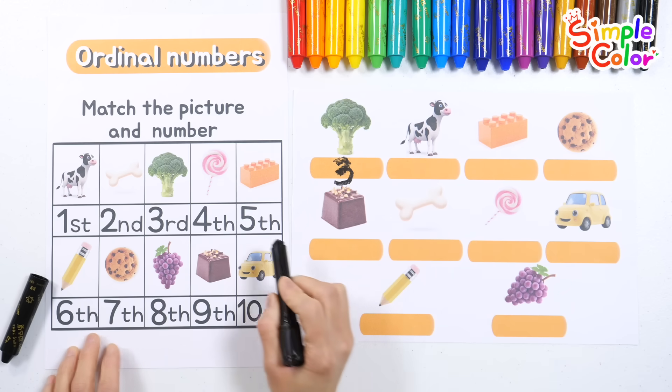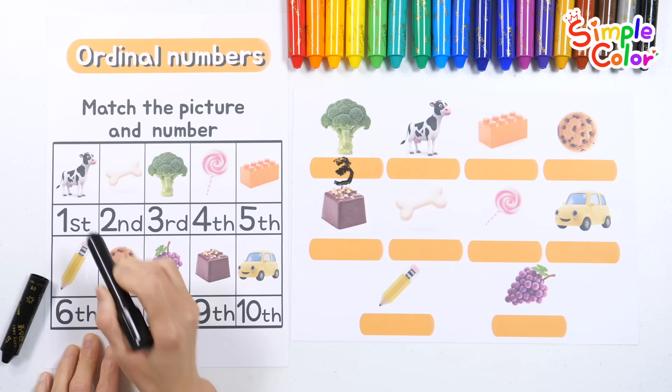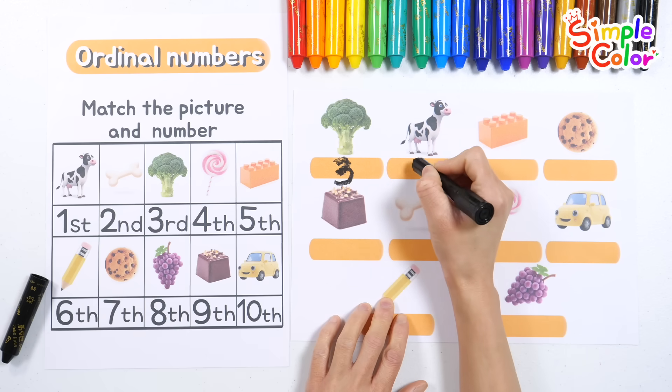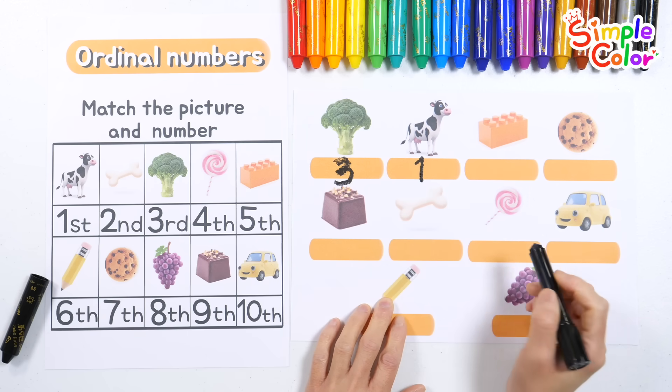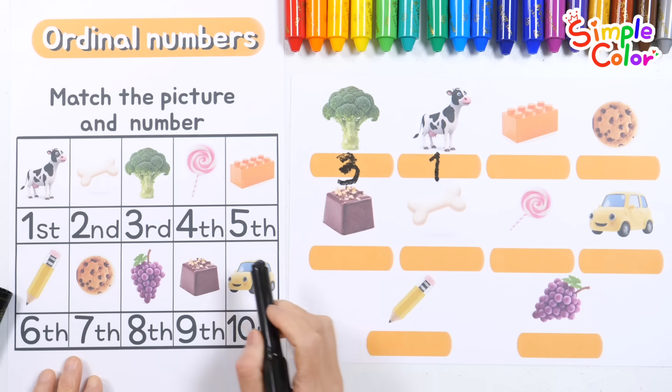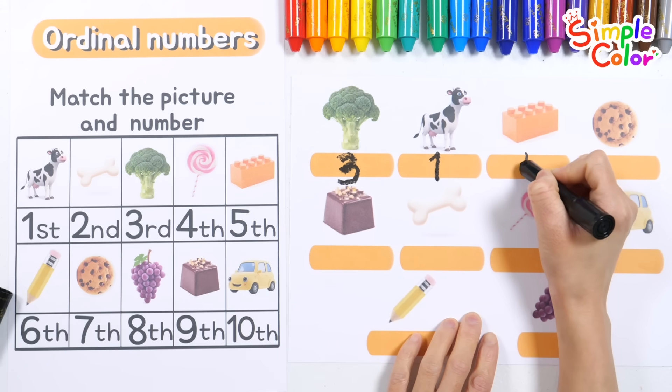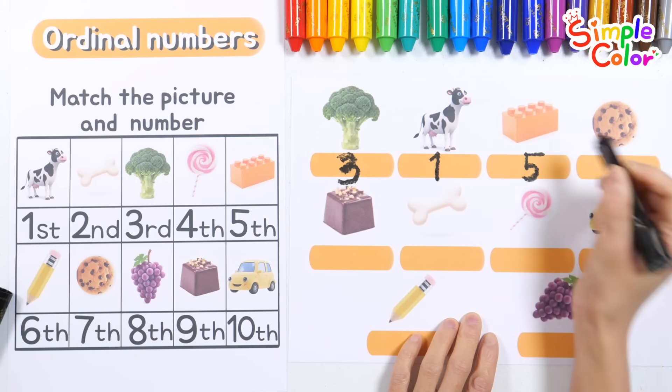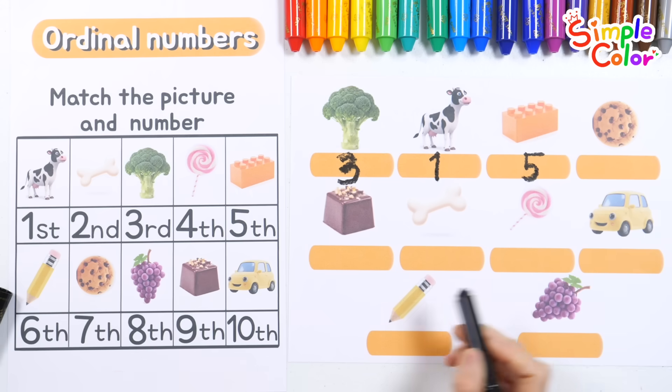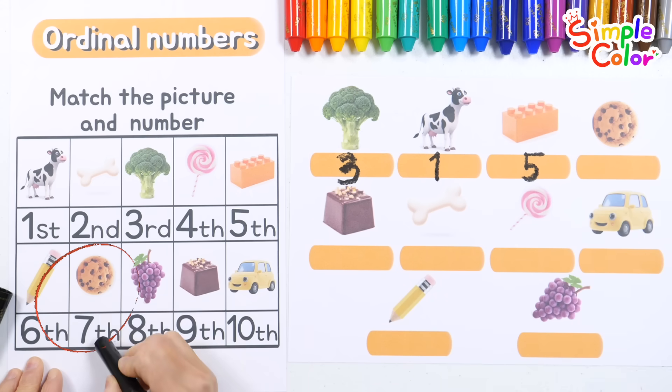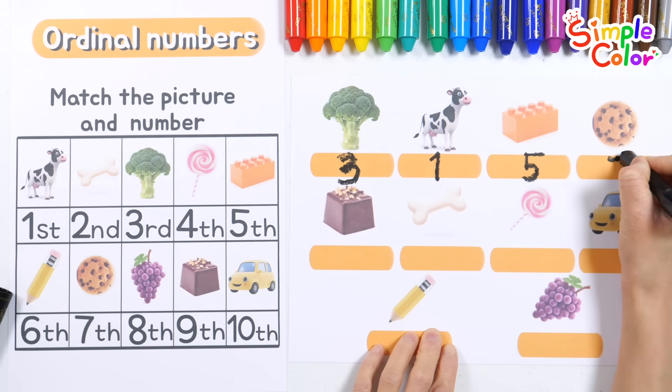Let's find out which number the cow was. That's right! The cow was first. One. Which number were the blocks? Correct! The fifth one. Five. The cookie was seventh. Seven.